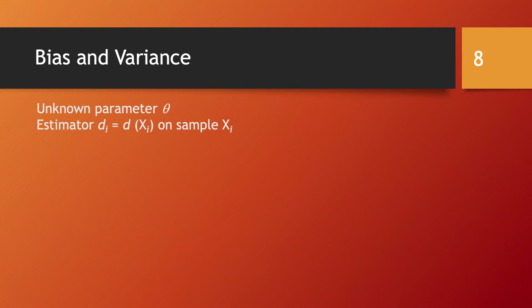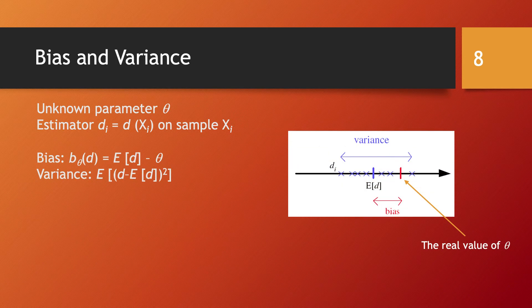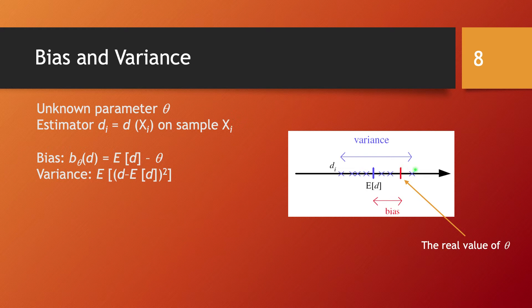We have some unknown parameter, some sample, and based on that sample we have an estimator of what the value of theta really is. We would like to quantify the quality of this estimator. If I denote by d_i the estimator on some sample x_i, we can have several different samples — quite many — and each time we will have a different estimator of theta. In this figure, for each sample we take we will have a different estimator of theta. Note that theta can be a multi-dimensional vector, not just one parameter.